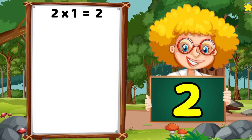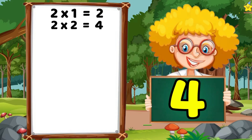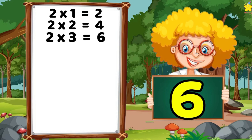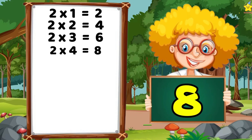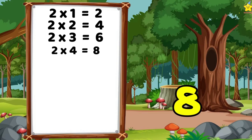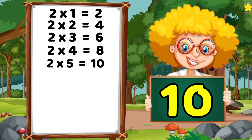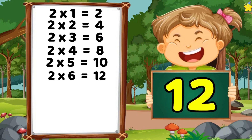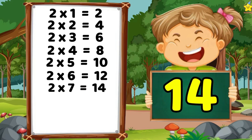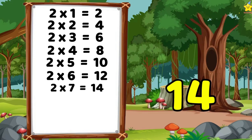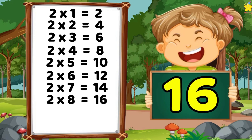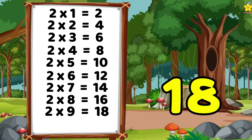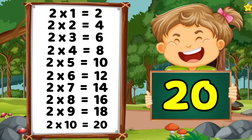Two times one is two. Two times two is four. Two times three is six. Two times four is eight. Two times five is ten. Two times six is twelve. Two times seven is fourteen. Two times eight is sixteen. Two times nine is eighteen. Two times ten is twenty.